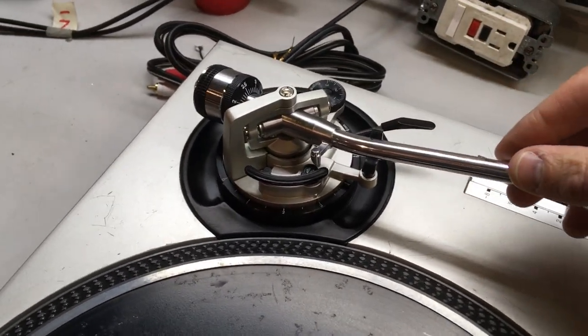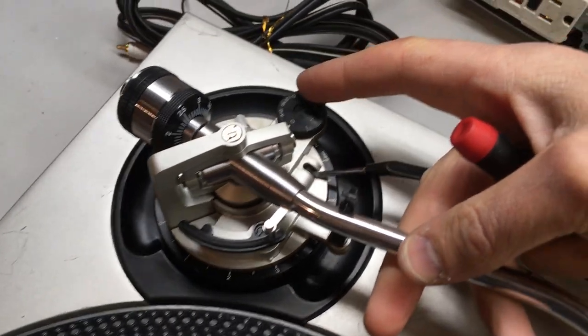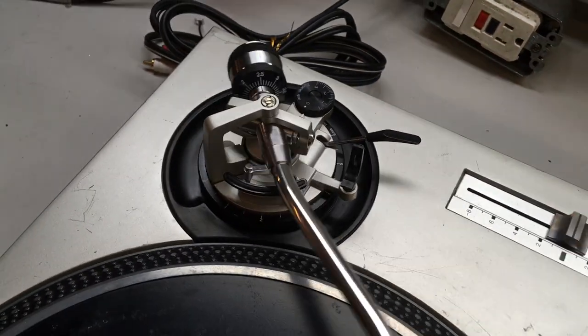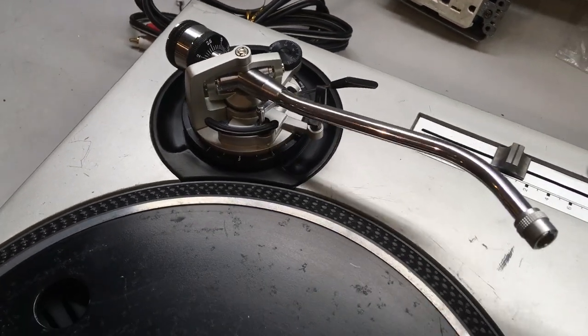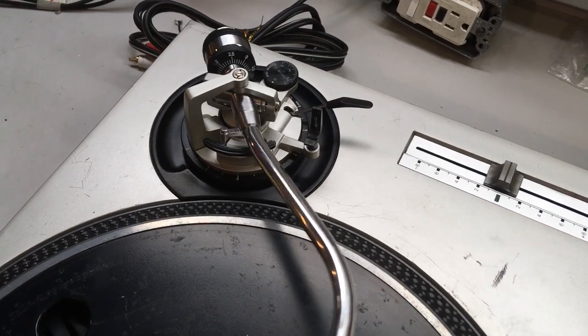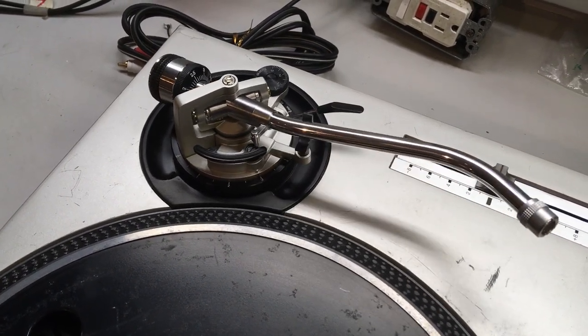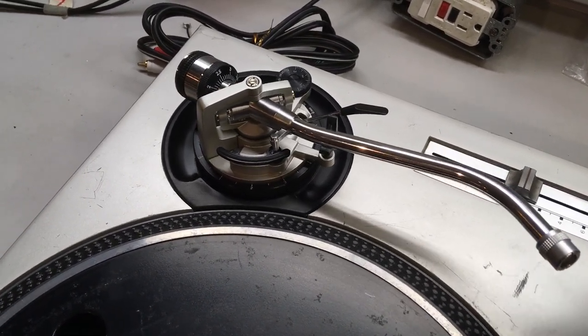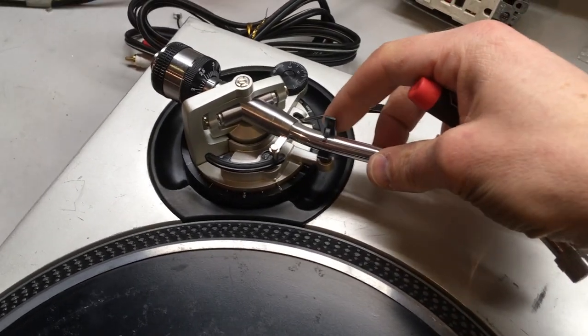A really easy way to check to see if it's great is set the anti-skate to zero and just give it a little push. Not with a whole lot of force—you're not trying to break it—but just seeing how easily it swings back and forth. That's a good tonearm.